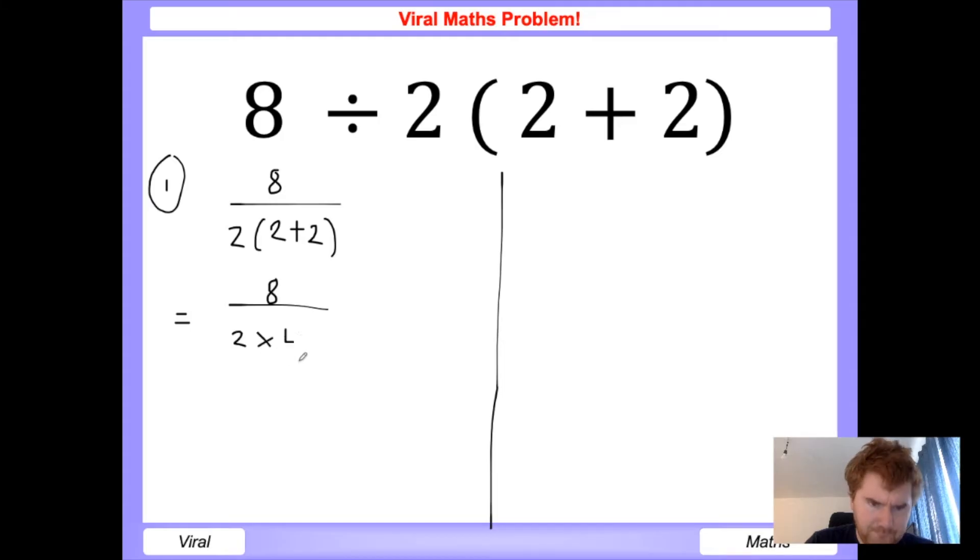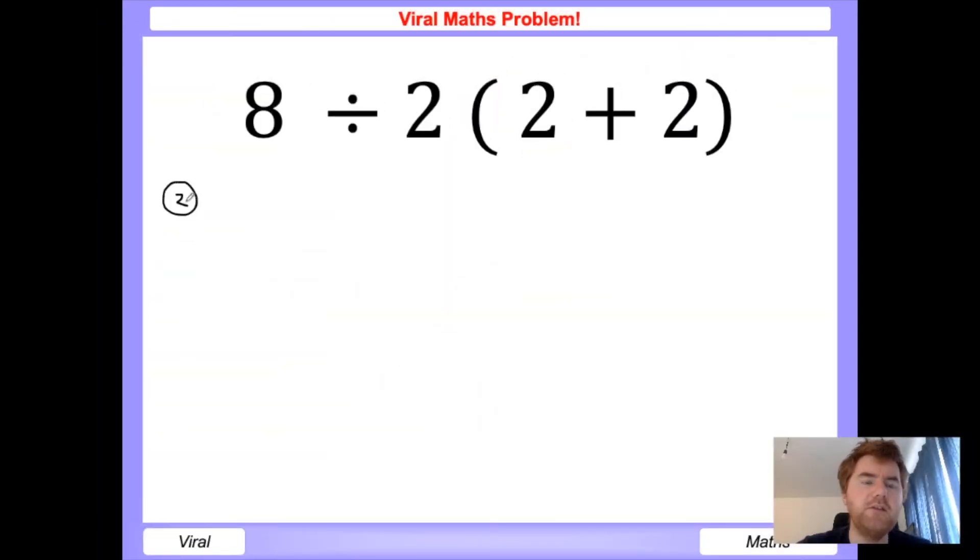4. Remember, if you have a bracket next to a number, it means it's multiplying. Then we do the bottom, so that's going to be 8 divided by 2 times 4, which is 8. And this gives us the answer of 1. So 1 is the correct answer to this viral problem.